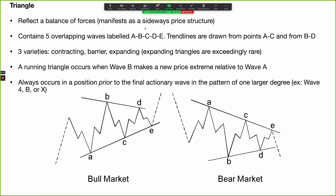We have the AC trendline and the BD trendline. There are three varieties: the contracting triangle, barrier triangles, and expanding triangles.